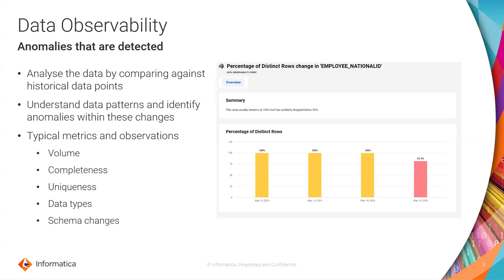What you can then do is say that a change is expected for whatever reason, or give feedback that yes, this was an anomaly — we identified the issue and fixed it. By doing that, the anomaly detection algorithms will be trained to get better over time with your input.